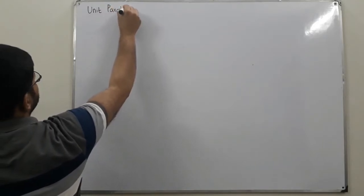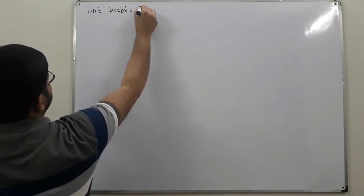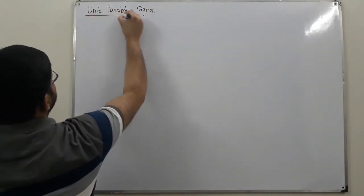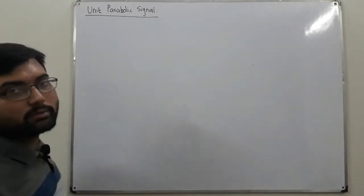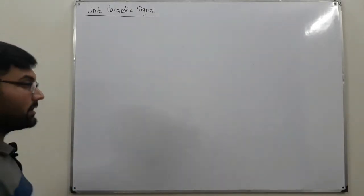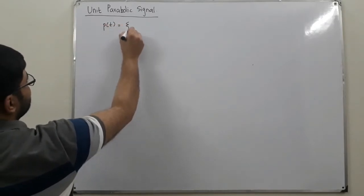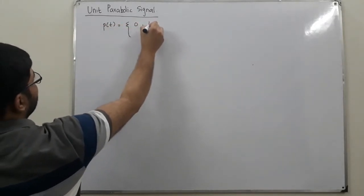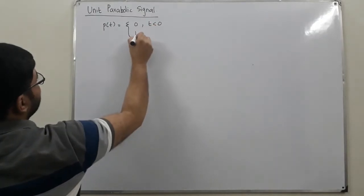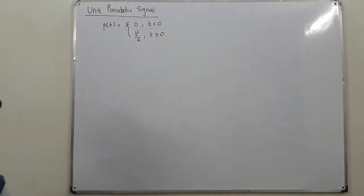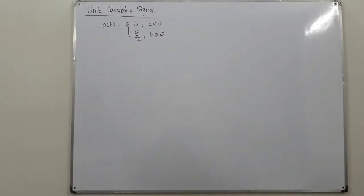Unit parabolic signal — a parabola is a quadratic waveform that represents a curve. The representation is P of T: it is 0 for T less than 0, and it is equal to T squared by 2 for T greater than or equal to 0. Before drawing the waveform, let's recall what we know about parabolas.